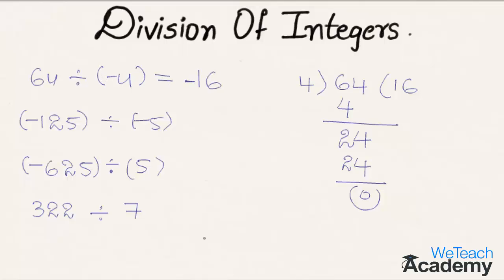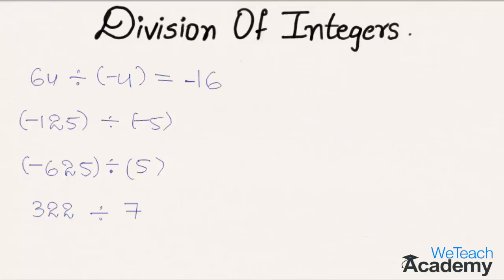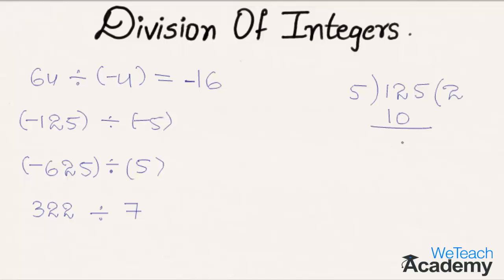The signs are opposite, so we get the result as minus 16. Coming to the next example: minus 125 divided by 5, which can be written as 125 divided by 5. Here 5 two times is 10, and 12 minus 10 is 2, bringing down the next digit.